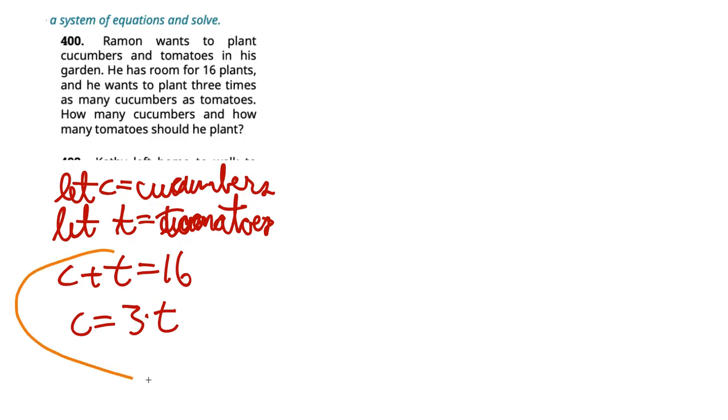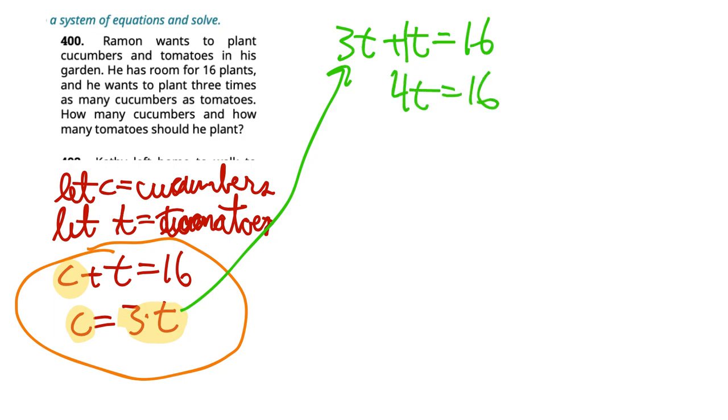So we're going to combine these two equations. Every time we see a C, we're going to substitute in three times T because basically all these are interchangeable. We go up here and instead of saying C plus T equals 16, we're going to write three T plus T equals 16. So three T plus one T is four T equals 16. We divide both sides by four to find out number of tomatoes. So that cancels on the left. We have T equals four.